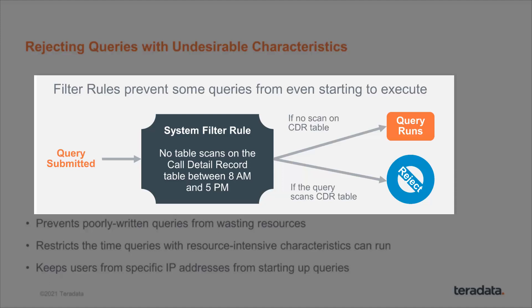It's a rule that prevents any query that wants to scan the call detail record table from executing between the hours of 8 a.m. and 5 p.m. Typically a call detail record is something used by a telco, and it's very large because it records every call made within that provider. So we'd like people to access it at busy times through indexes — a more efficient way — rather than full table scans, which read every single record.